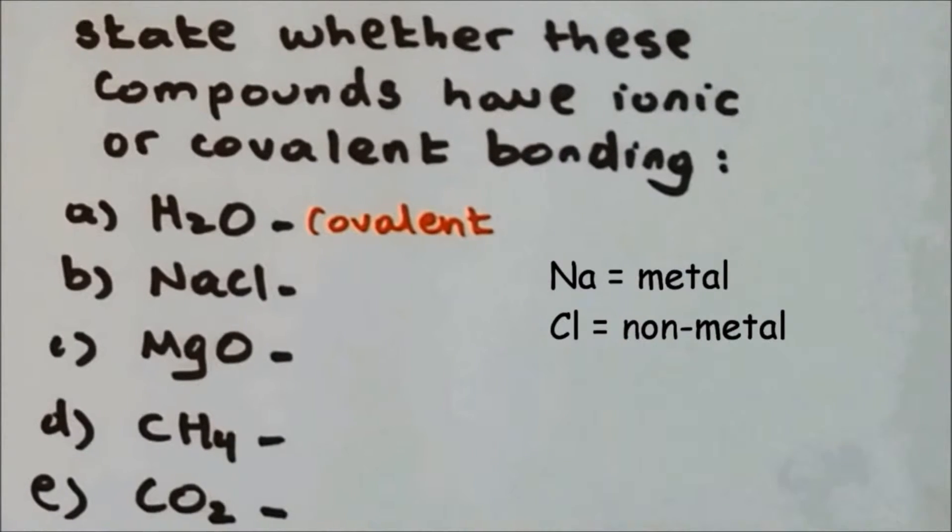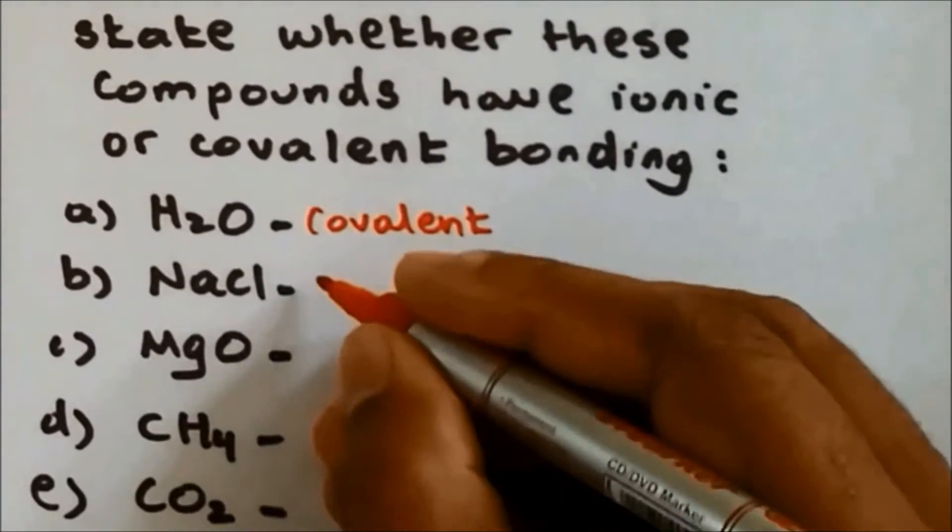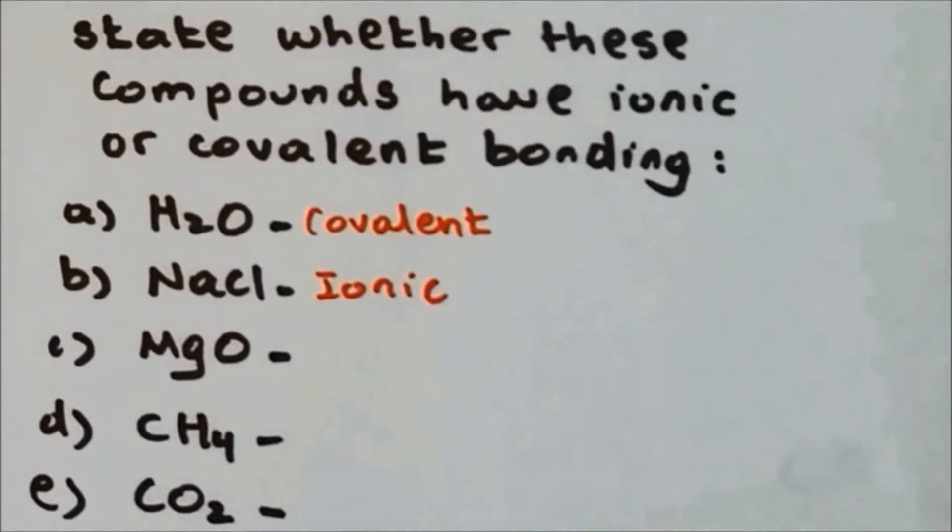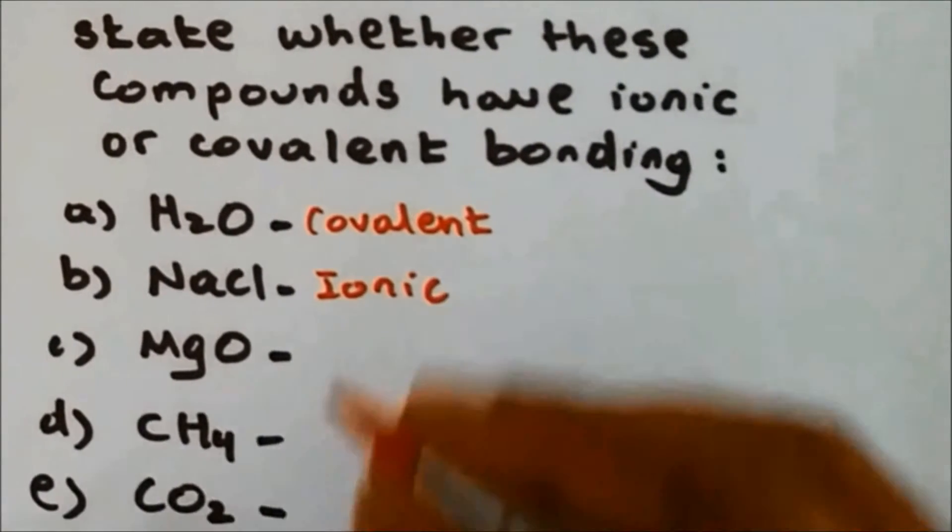NaCl: Sodium is a metal and chlorine is a non-metal, so this is ionic bonding. Magnesium oxide: Magnesium is a metal and oxygen is a non-metal, so again, this is ionic bonding.